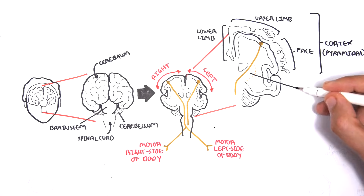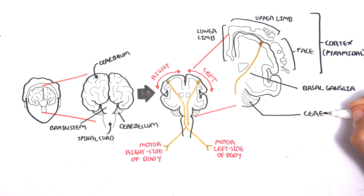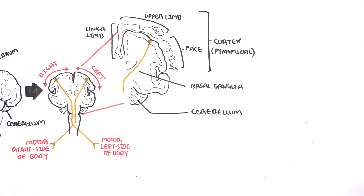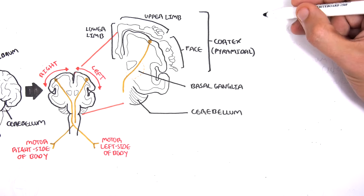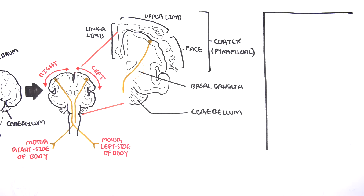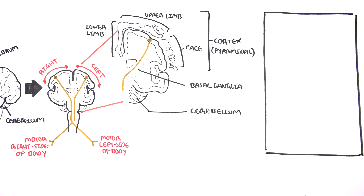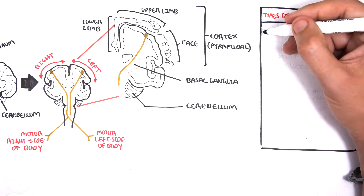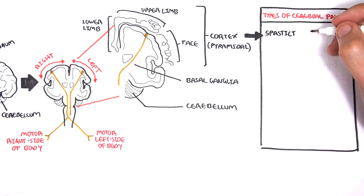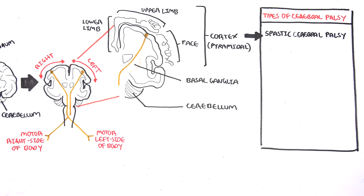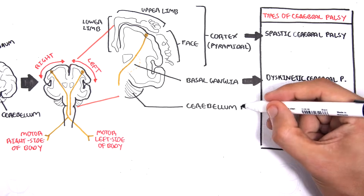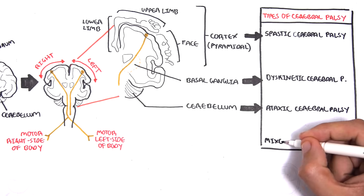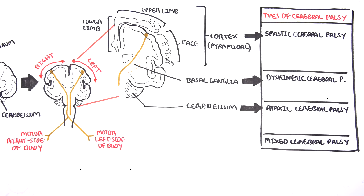The basal ganglia and cerebellum communicate with the voluntary neurons to help send coordinated, learned movement patterns. They are extrapyramidal because they are not under conscious control. The types of cerebral palsy correspond to one or more of these regions — problems in the cortex cause spastic cerebral palsy, problems in the basal ganglia cause dyskinetic cerebral palsy, cerebellum problems cause ataxic cerebral palsy, and there is also mixed cerebral palsy, which involves a mixture of one or more regions.